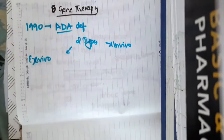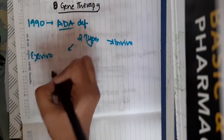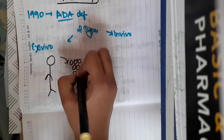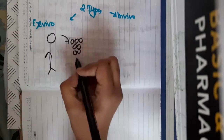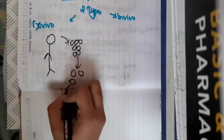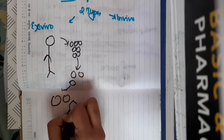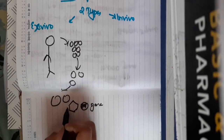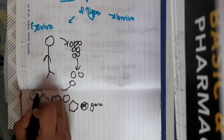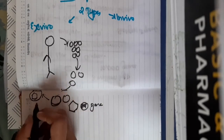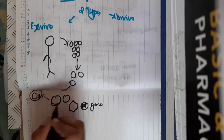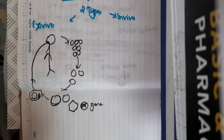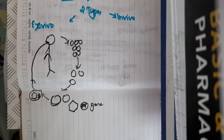In the ex vivo strategy of gene therapy, we will first take the cells from the patient — cells with the defective gene — and to these cells we will add a retrovirus which is carrying the normal gene. This retrovirus infects the cells of the patient, enters into them, and will produce the proteins or the function of the normal gene. These genetically corrected cells are then given back or injected back to the patient.